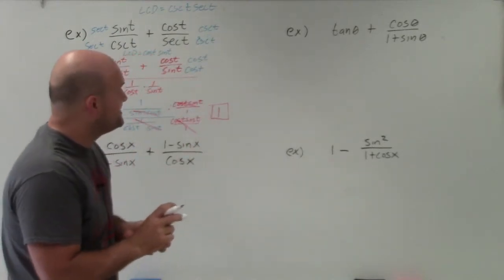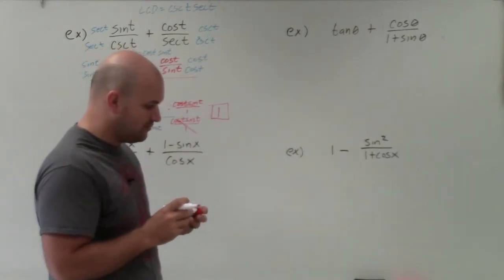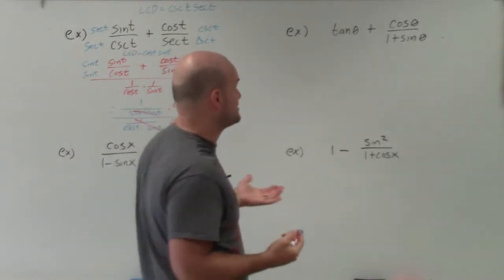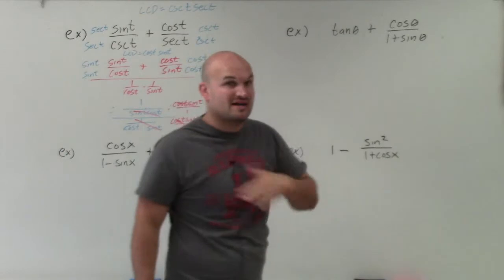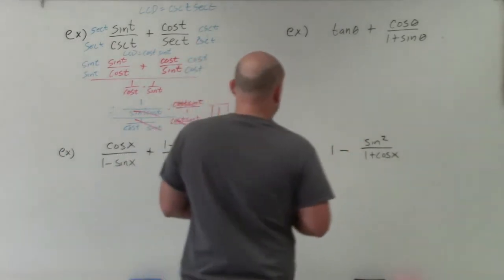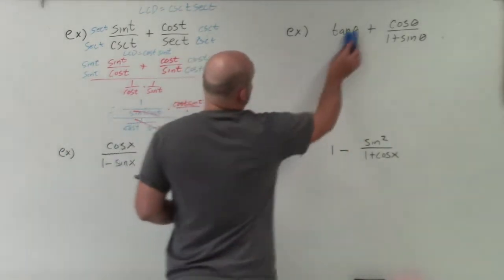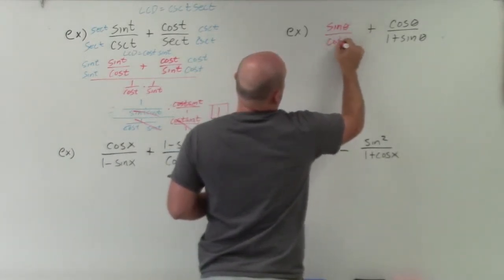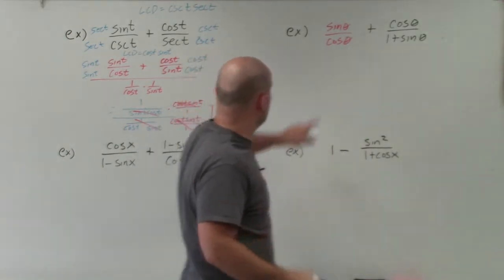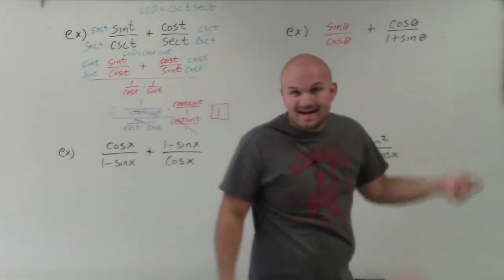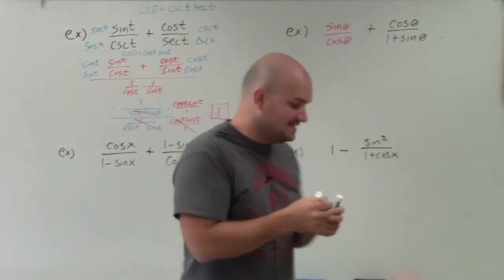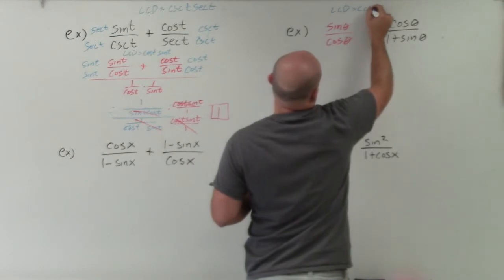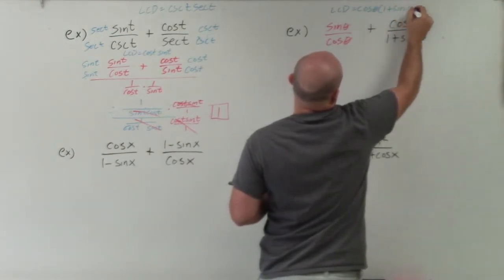For the next example, we have tangent of theta plus cosine of theta over 1 plus sine of theta. We need to add our fractions. Tangent of theta isn't written as a fraction, so let's rewrite it as sine of theta over cosine of theta. Now the two denominators are cosine of theta and 1 plus sine of theta. Therefore, the LCD is their product: cosine of theta times 1 plus sine of theta.